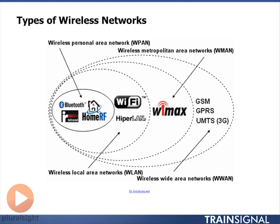If we extend the range a little bit more, we come out to the wireless local area network. For instance, you may have a Wi-Fi access point deployed in your home that gives you coverage within your home. Then we talk about wireless metropolitan area networks — this is where we're going outside of the home, perhaps covering the city area or a local town. Example technologies here would be WiMAX, which was a technology that Cisco invested in for many years.